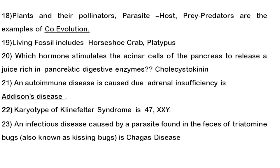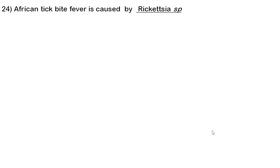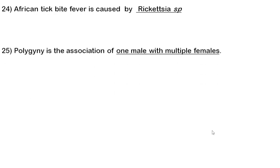For Chagas disease and similar infections, you need to know the responsible parasite, the vector organism, and whether transmission is via bite or feces. Twenty-fourth question: African tick bite fever is caused by Rickettsia species — a bacterial species. Study protozoan parasites causing human diseases and vector-transmitted organisms.